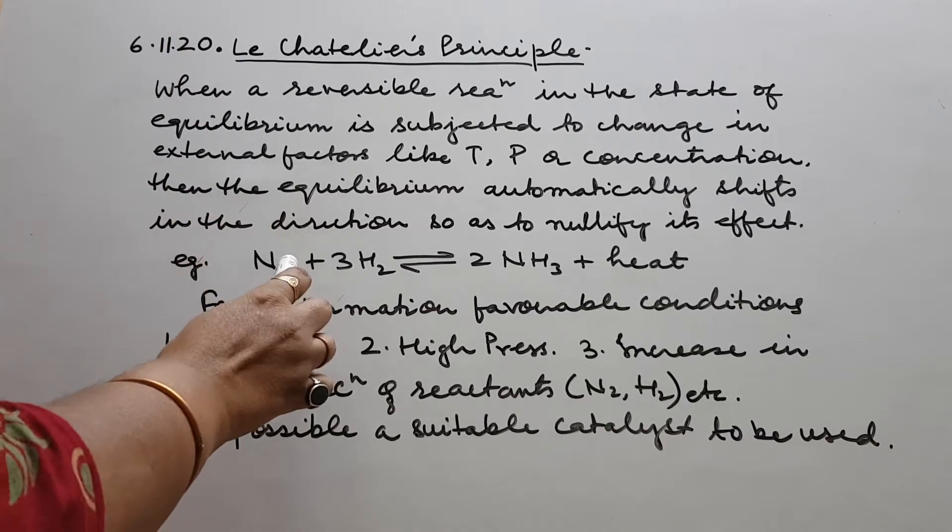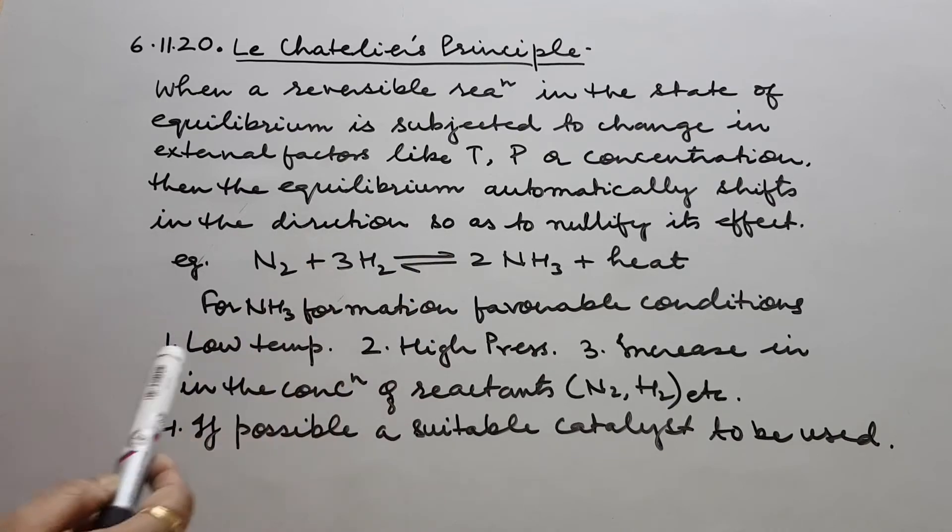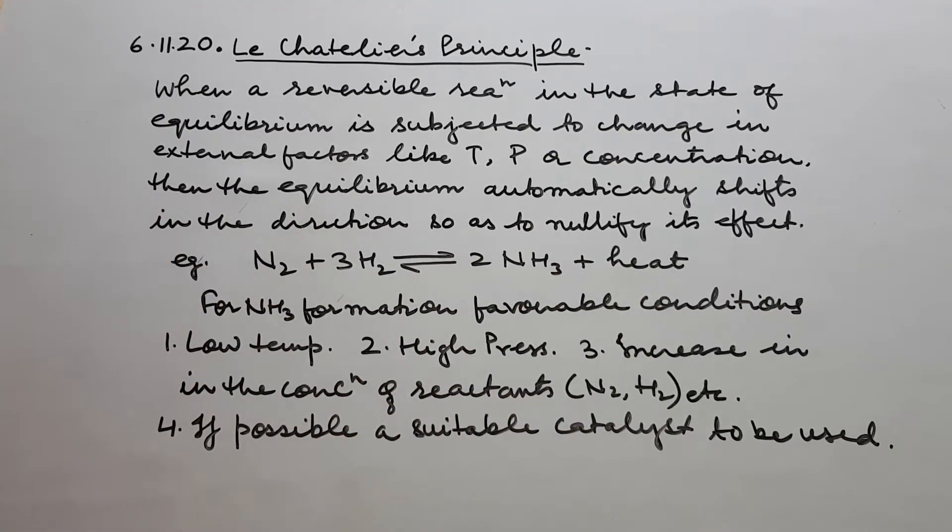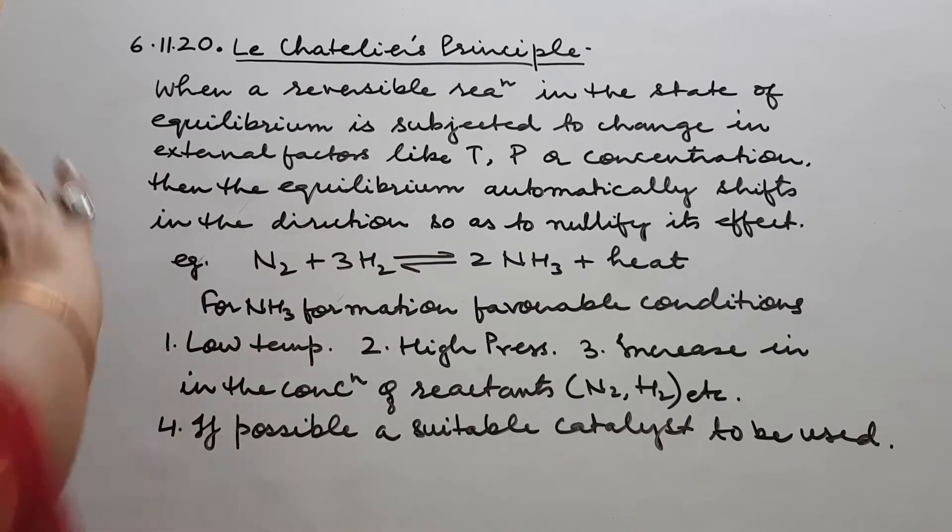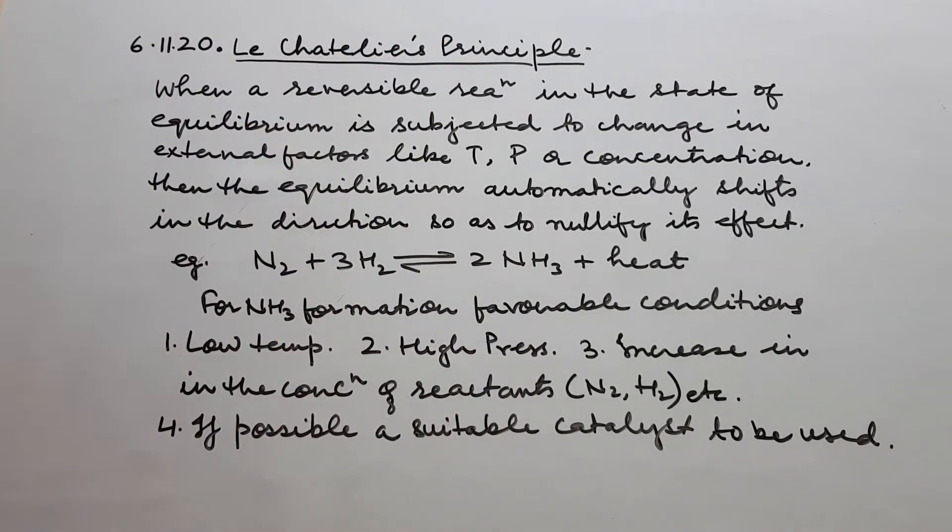Suppose I take example of this reaction. N2 plus 3H2, it's a reversible reaction, gives you 2NH3. And it's exothermic, gives out heat. Now, suppose I'm asked, what will be the suitable conditions for the formation of ammonia by this Haber's process? I just wrote the reaction, they're asked in class 10 also.